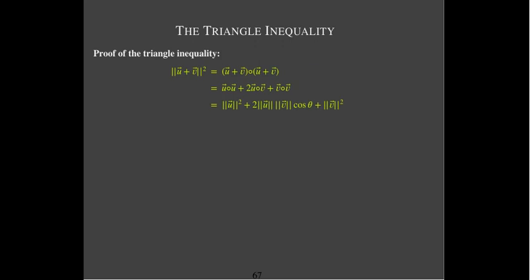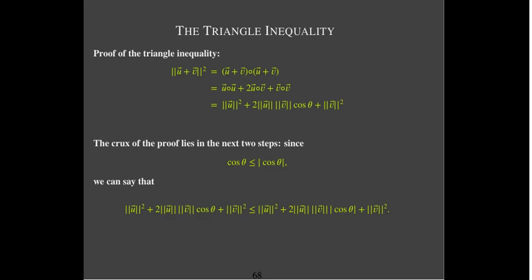So now I have the length of u squared plus two times the length of u times the length of v times cosine theta, plus the length of v squared. I use the fact that any number is less than or equal to the absolute value of that same number, so cosine of theta is less than or equal to the absolute value of cosine theta. Replacing cosine theta with its absolute value gives a bigger expression.